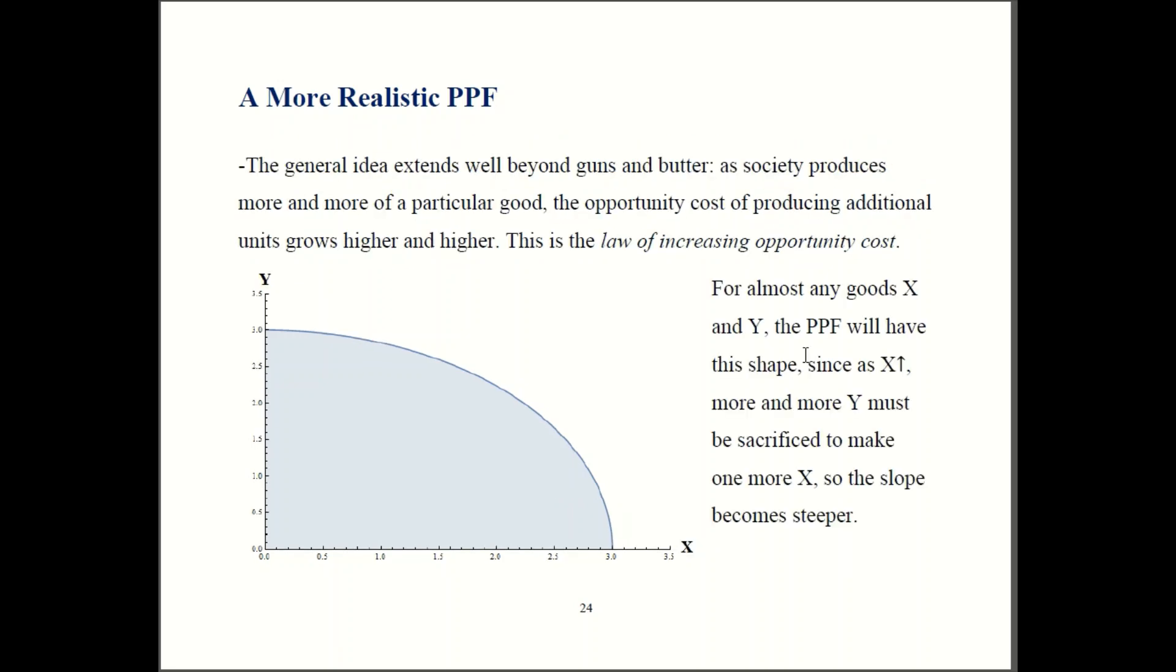So I told this story in terms of guns and butter, but it applies much more broadly than that. Actually, for just about any pair of goods, X and Y, you'll get a slope like this for the same reason. If you have lots of X already and you're trying to make even more X, that's going to be less efficient because you're taking stuff that's really better designed to make Y. So you have a steeper trade-off here, a steeper slope. So you go out in this direction. So the curve is going to bow out like that. So this concept has a name, and that name is the Law of Increasing Opportunity Cost. It gives you this sort of shape for your PPF.